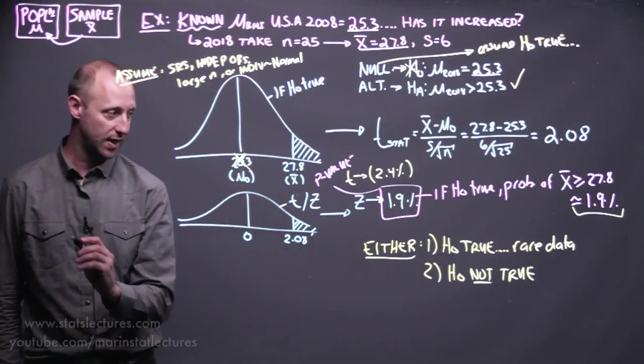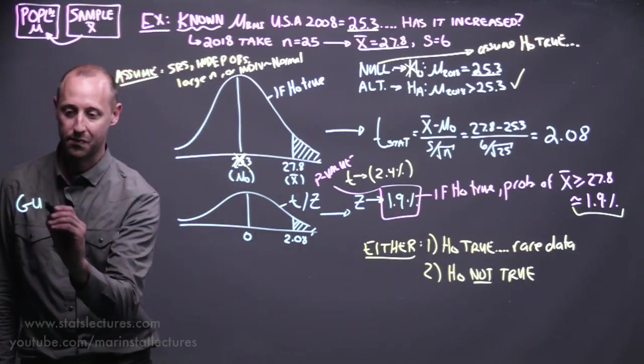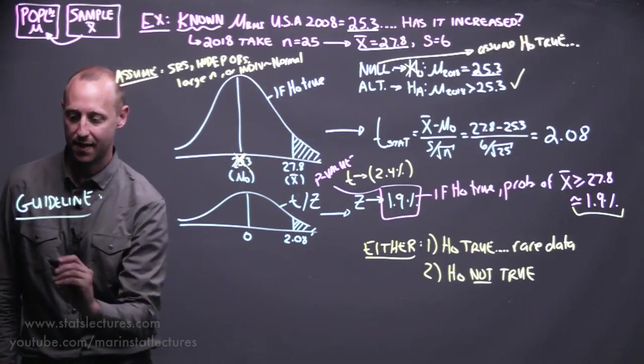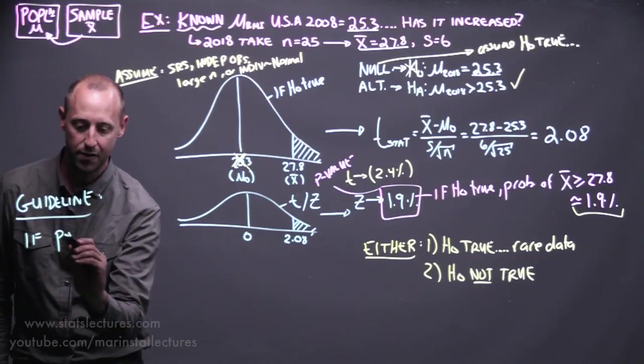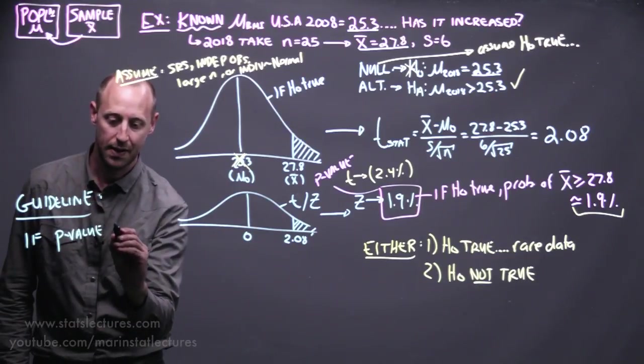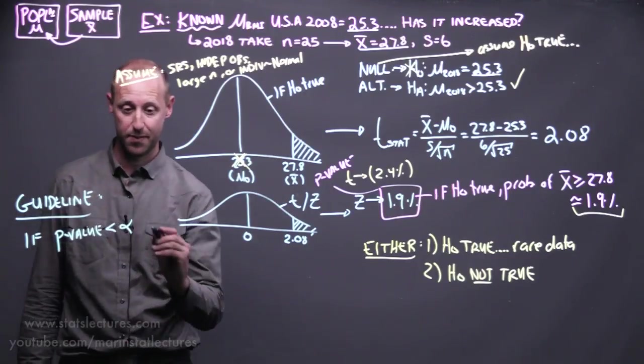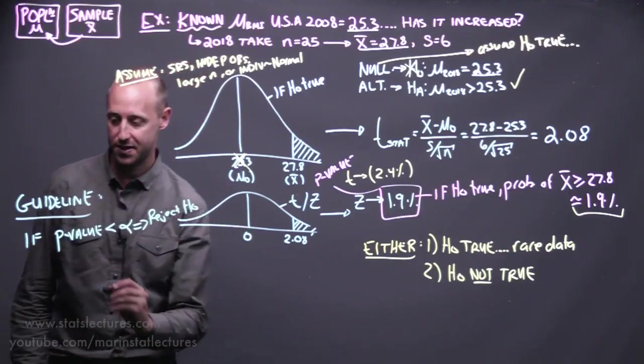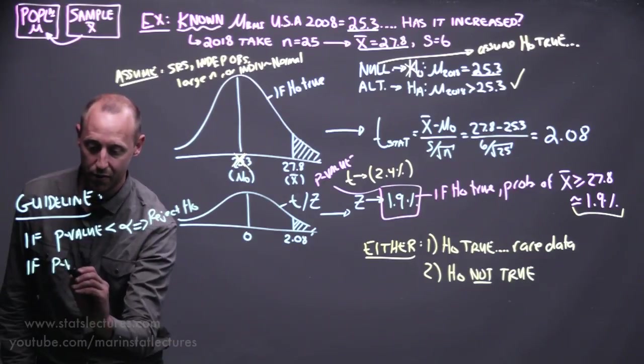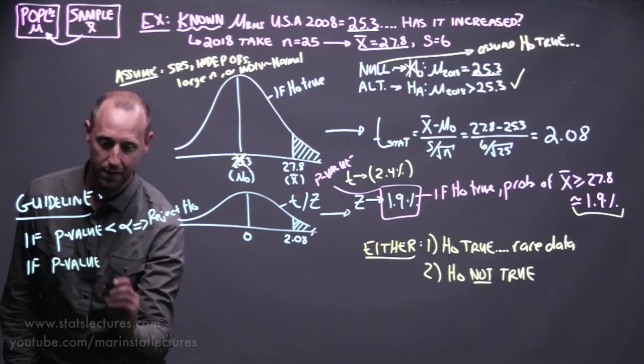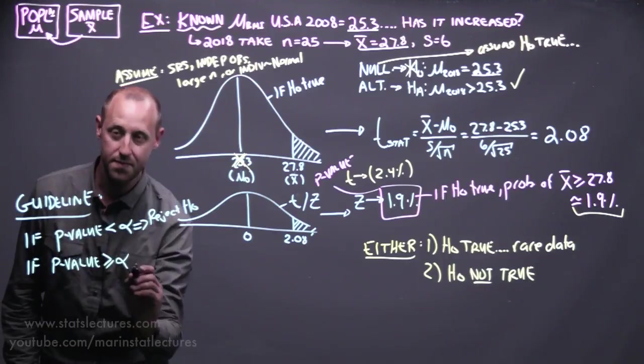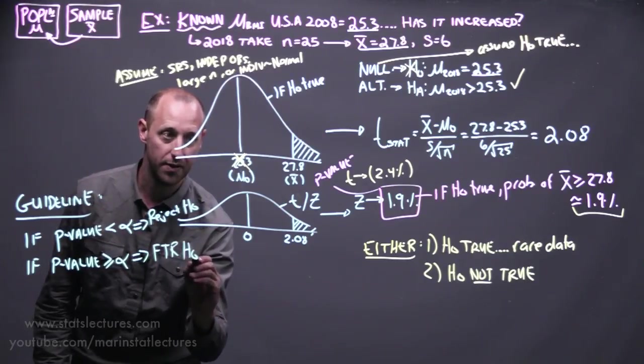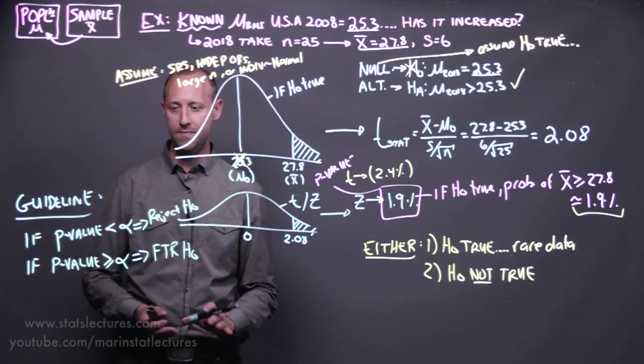Some guidelines, okay, and these are only guidelines. I don't want to get too stuck on them. So, if the p-value is less than some alpha, usually 5%, we're going to reject the null hypothesis. If the p-value is large, greater or equal to some alpha, again, usually 5%, we're going to fail to reject the null hypothesis.